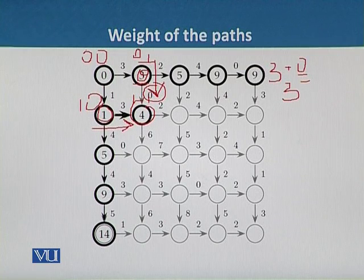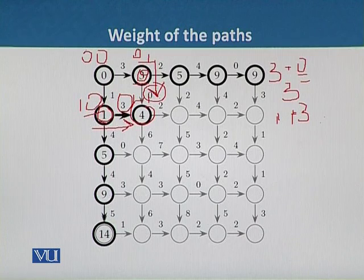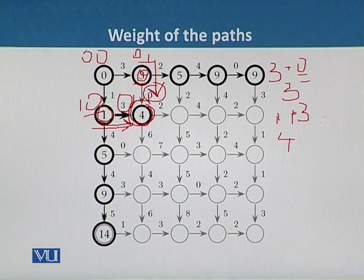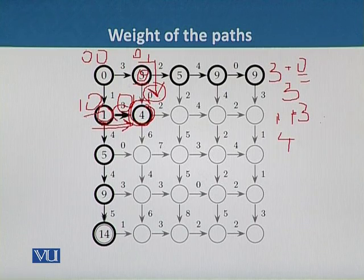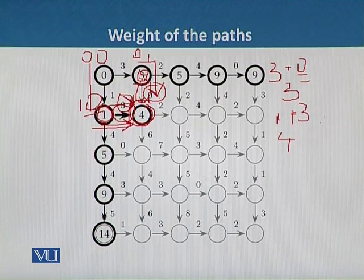If the tourist moves from (1,0) to (1,1), the value of that edge is 1 and the previous edge is 3, so 1 plus 3 gives a value of 4. The longest path with the highest weight is therefore via (1,0) to (1,1), as indicated by the bold arrow. The non-bold arrow represents the suboptimal path. The tourist should move south first, then east, to gain the maximum weight and see the most sightseeing.